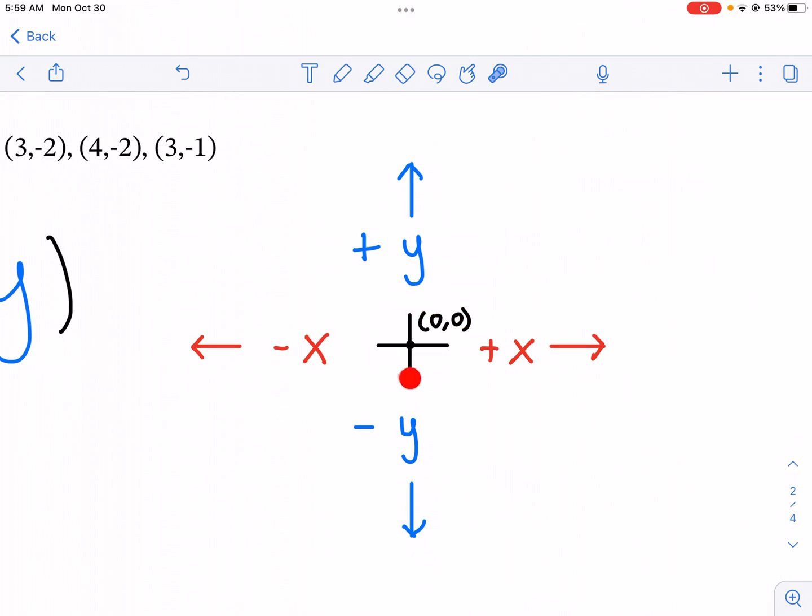We're going to always start at (0,0) in terms of where we go. If we have a negative x, we're moving to the left. Negative y, we're moving down. Positive x to the right and positive y, we're moving up.